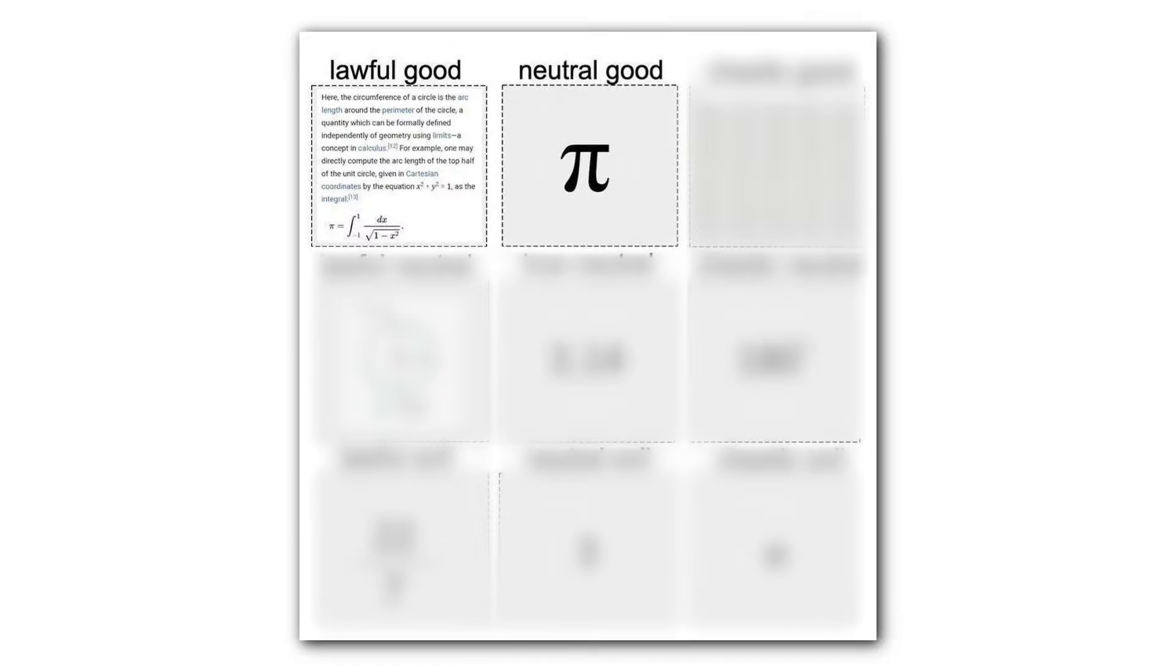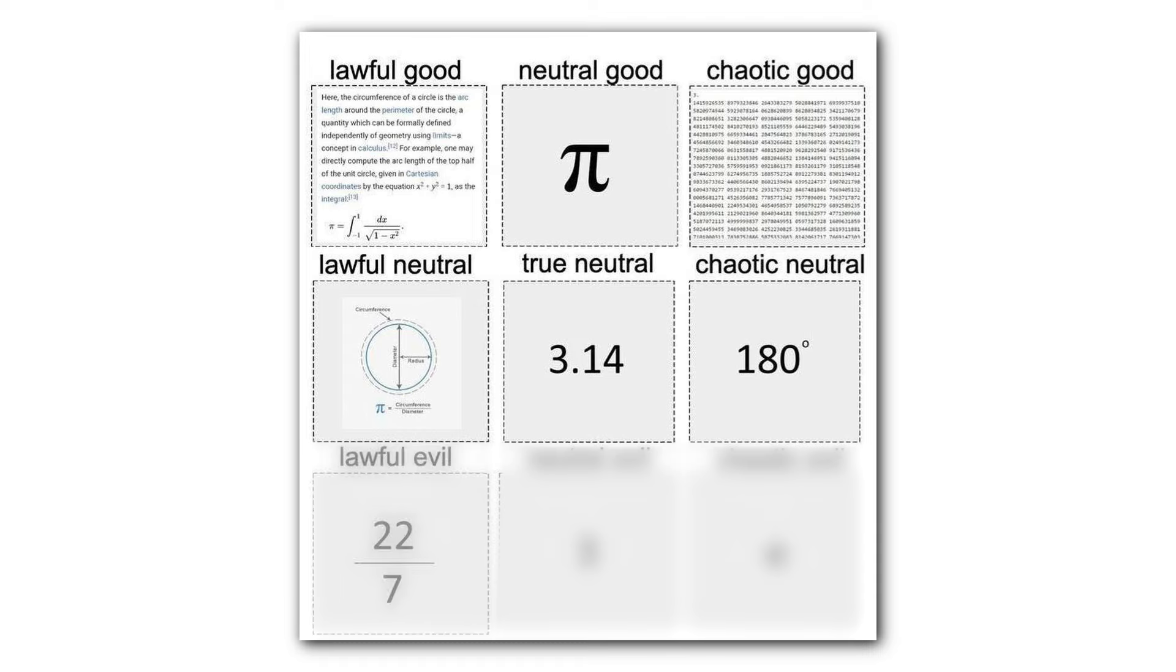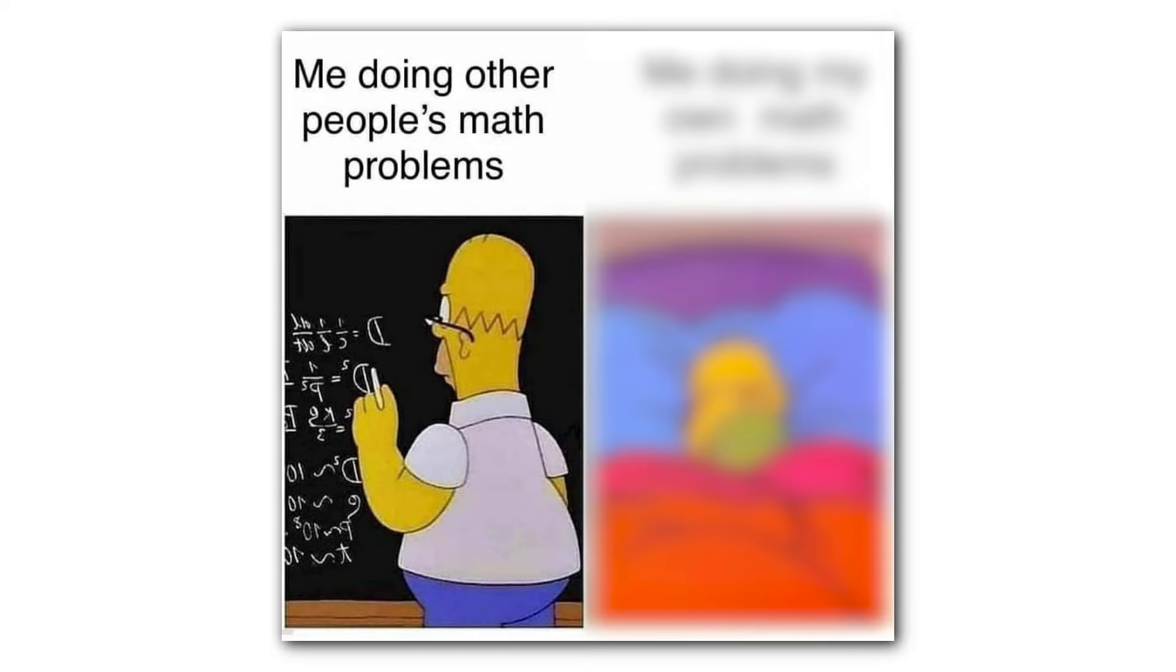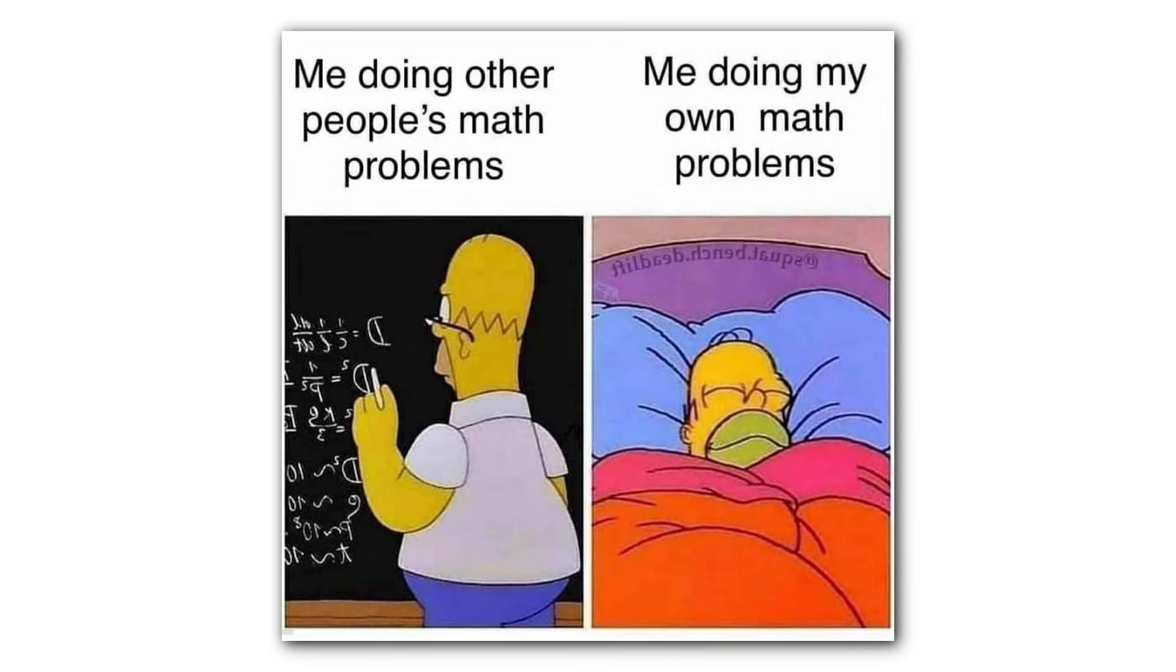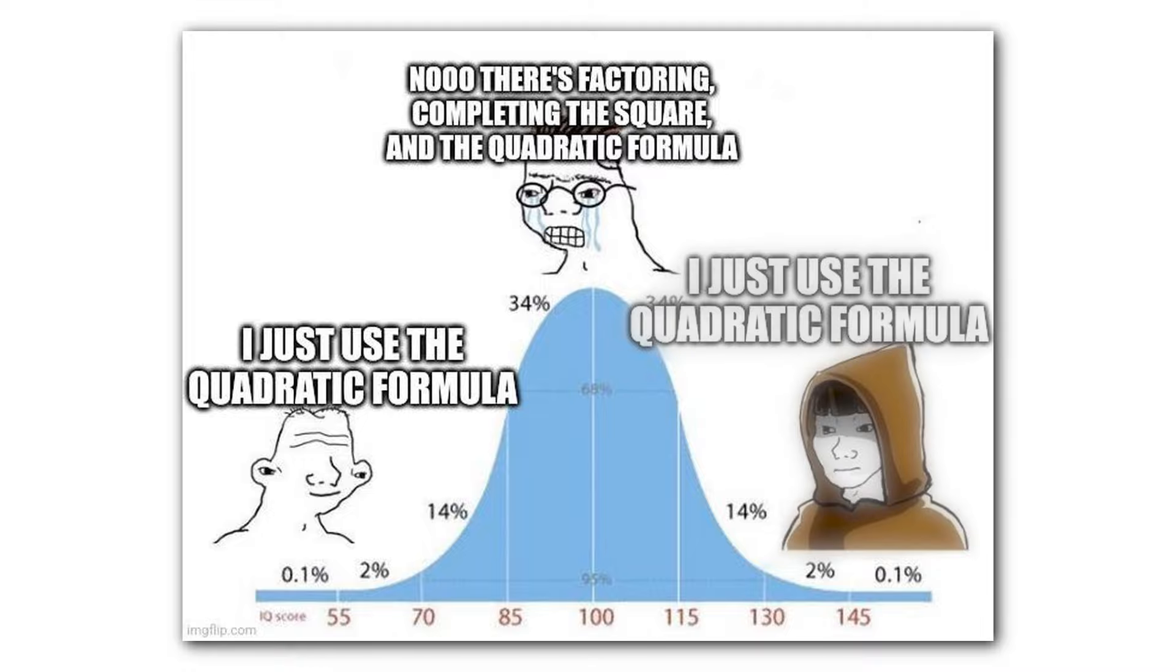Lawful good. Neutral good. Pi. Chaotic good. Lawful neutral. True neutral. Chaotic neutral. Lawful evil. Neutral evil. Chaotic evil. Fourier transform. Courier transform. Me doing other people's math problems. Me doing my own math problems. I just use the quadratic formula. No, there's factoring, completing the square, and the quadratic formula. I just use the quadratic formula.